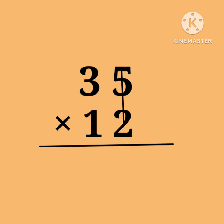Just multiply 5 by 2, we get 10. Write 10's 0, carry 1. Now cross multiply: 3 × 2 plus 5 × 1 equals 11. Adding carry 1, total becomes 12. Now write 12's 2 and carry 1.